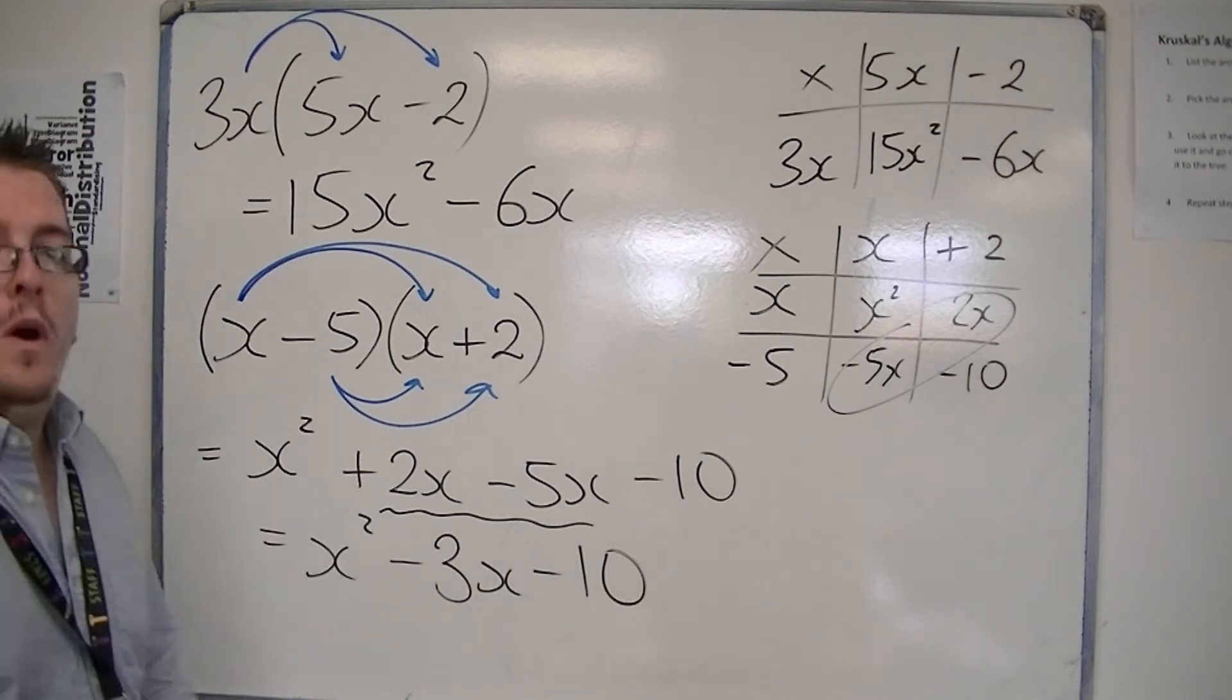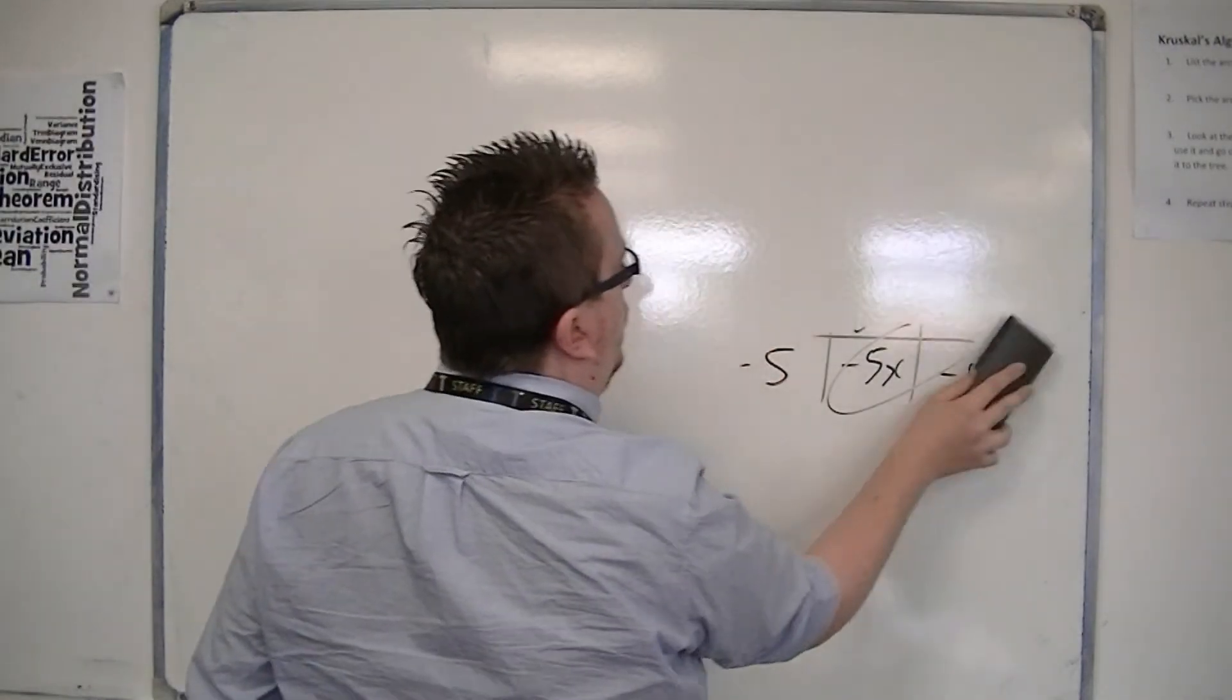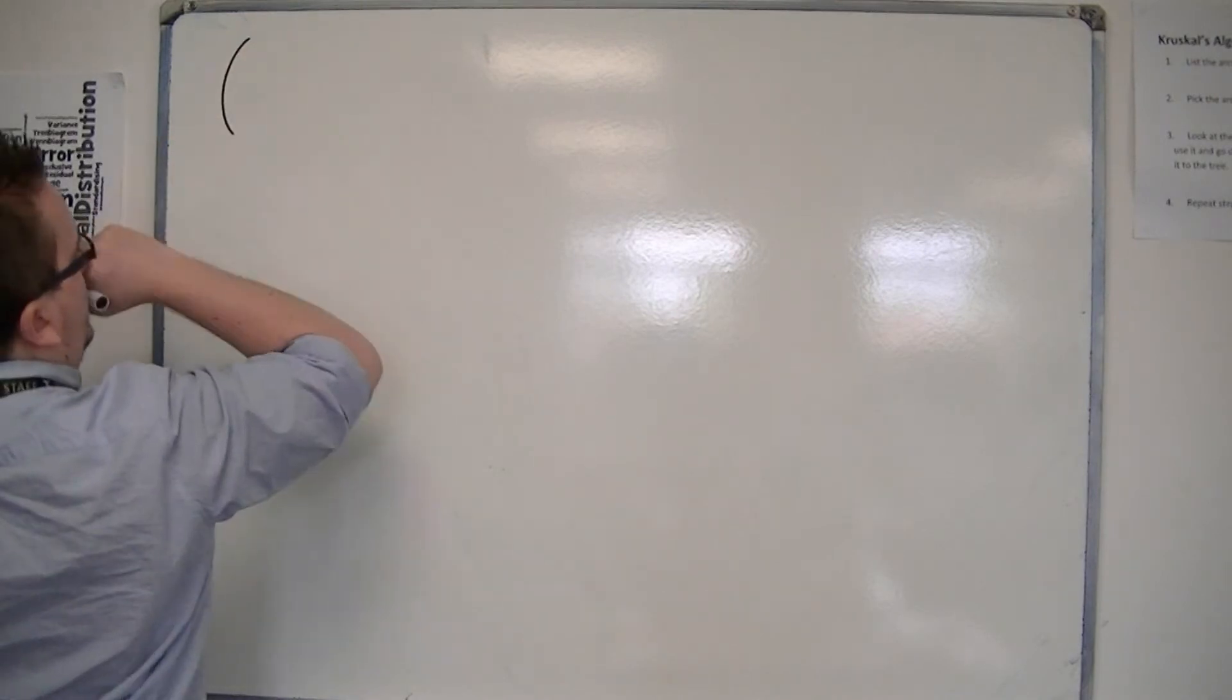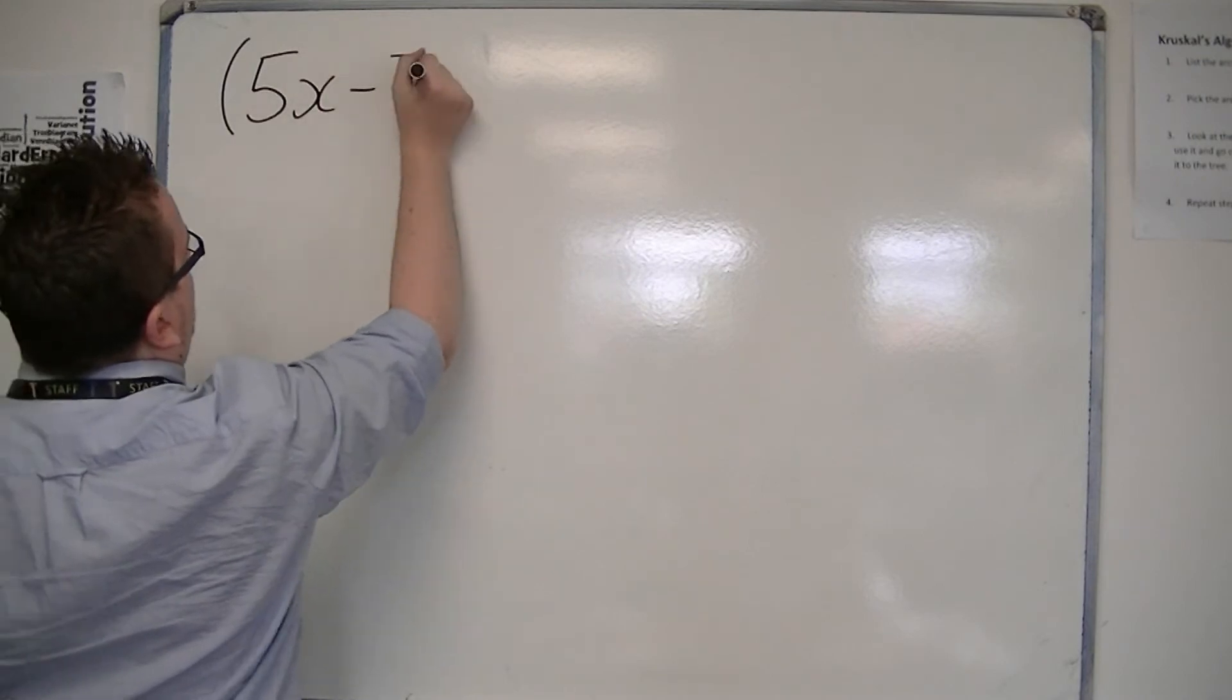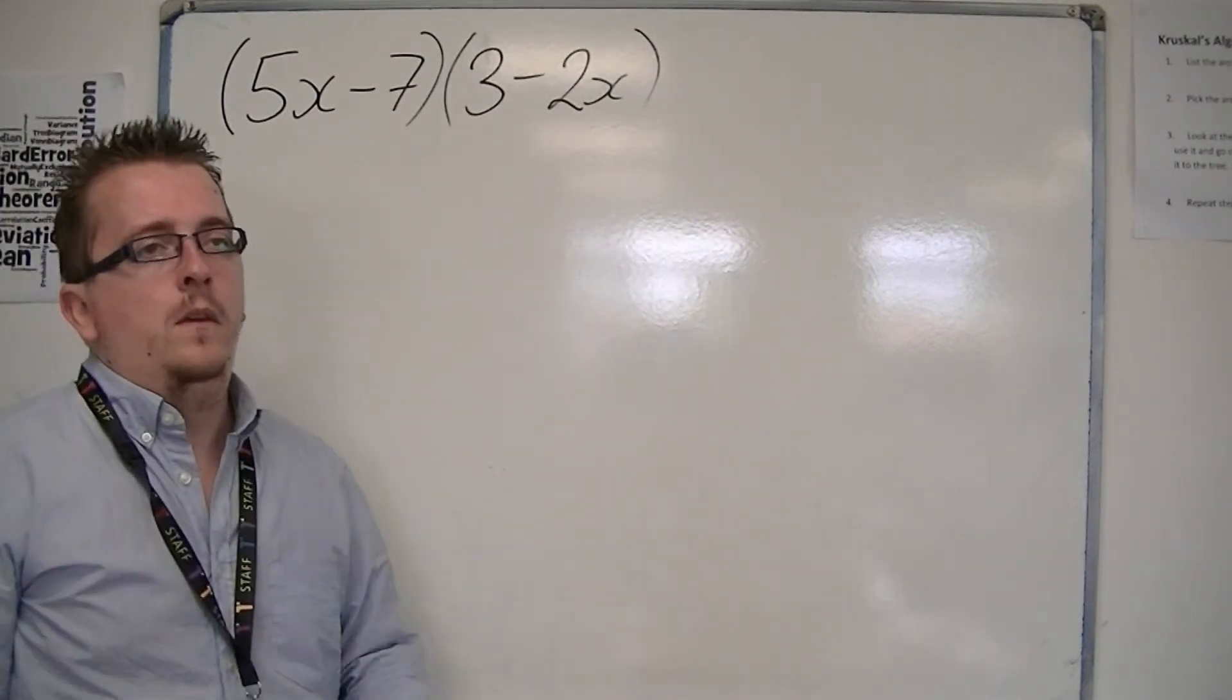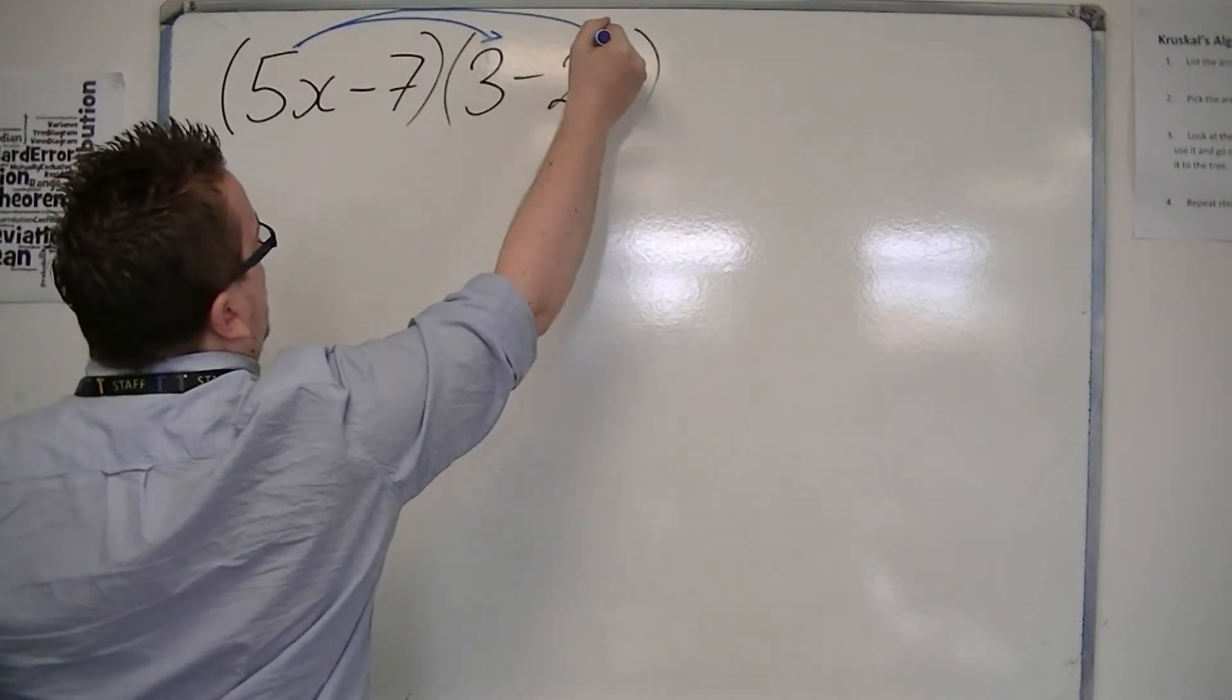Let's just do one final one with some nasty bits in it, I guess, just to practice your expanding. Let's make it a little bit tricky. Let's put in something like 5x minus 7, and we can have 3 minus 2x. Nothing wrong with that. Using the same method, I'm not going to bother drawing up the grid this time.